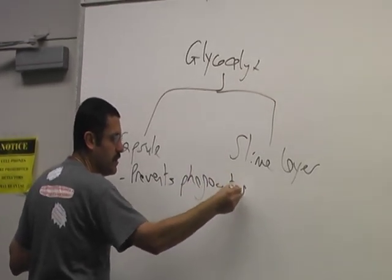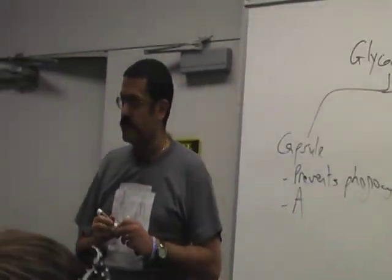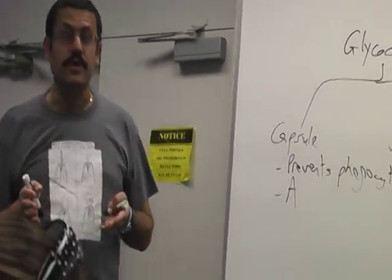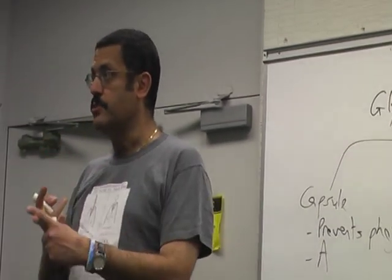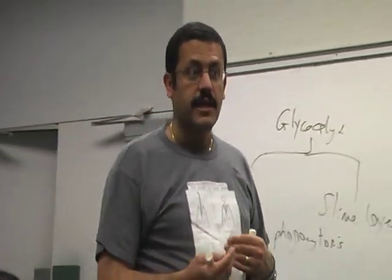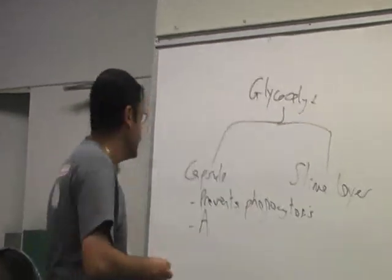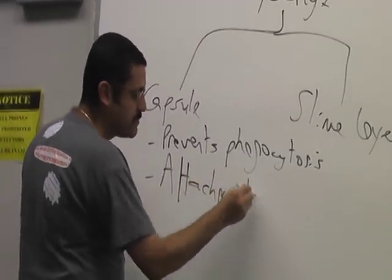There will be another one starts with an A, attachment. And the organism that comes to mind is a strep. Streptococcus mutans causes dental caries, that's the attachment portion. Streptococcus pneumoniae is the one where you have RNS strains. So attachment, nothing more about capsules.